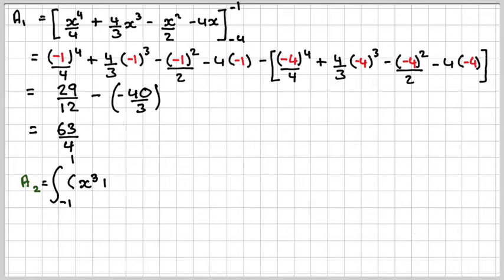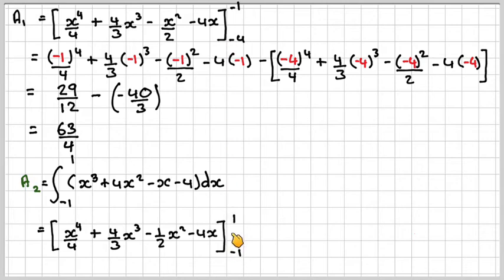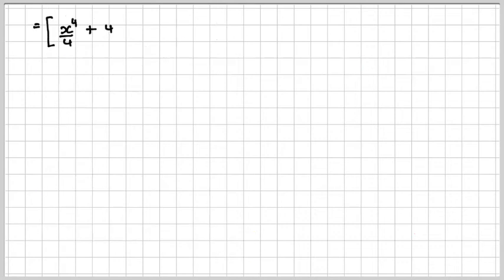A2 will be the integral from minus 1 to 1 of x cubed plus 4x squared minus x minus 4. And then the same thing. We've already integrated it once. So it's just got to be this with different limits. So the limits will be from minus 1 to 1, and again we will just have to substitute in.